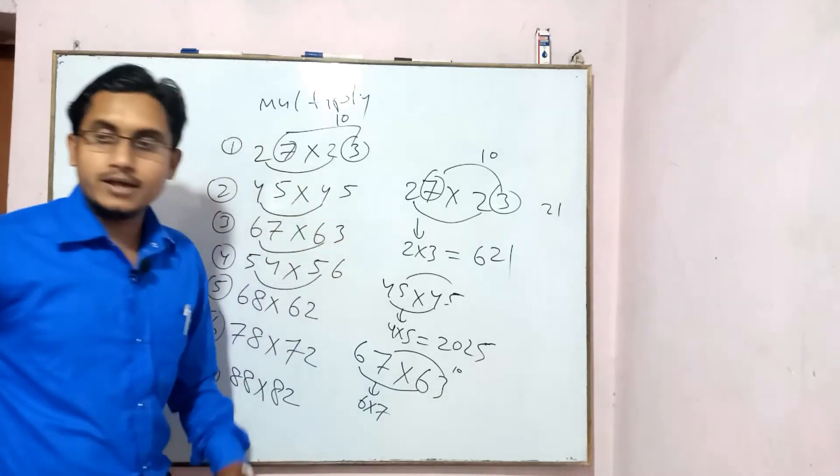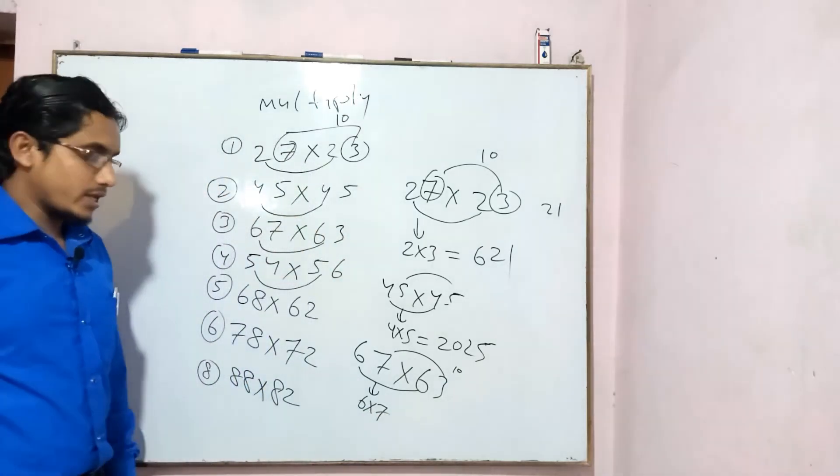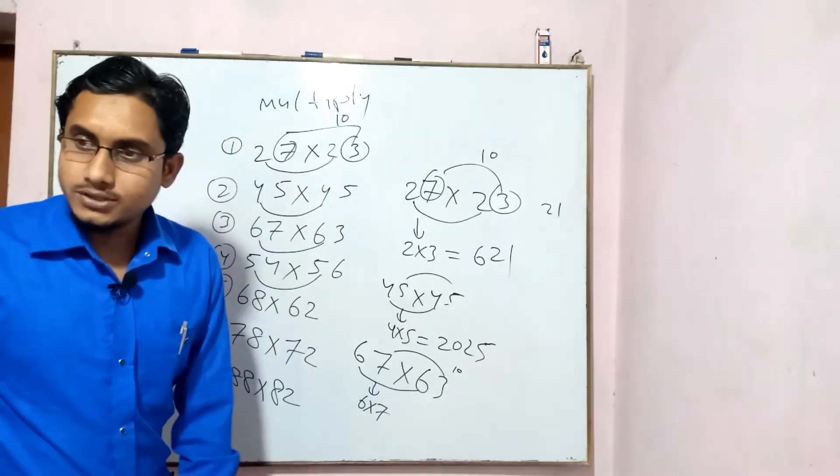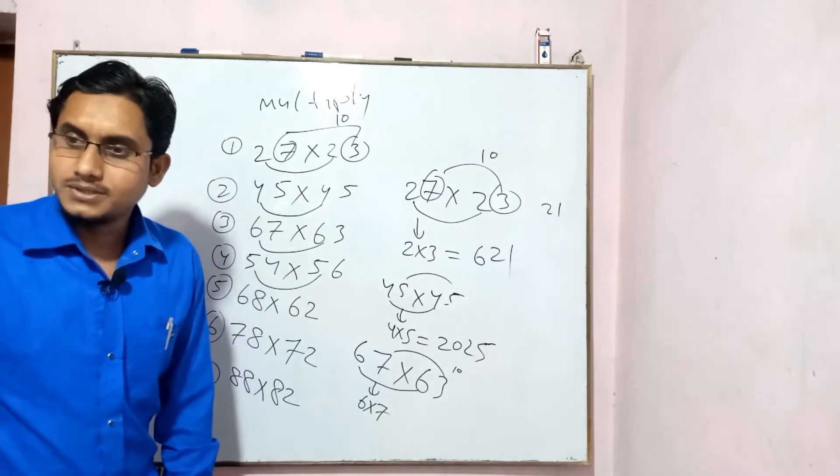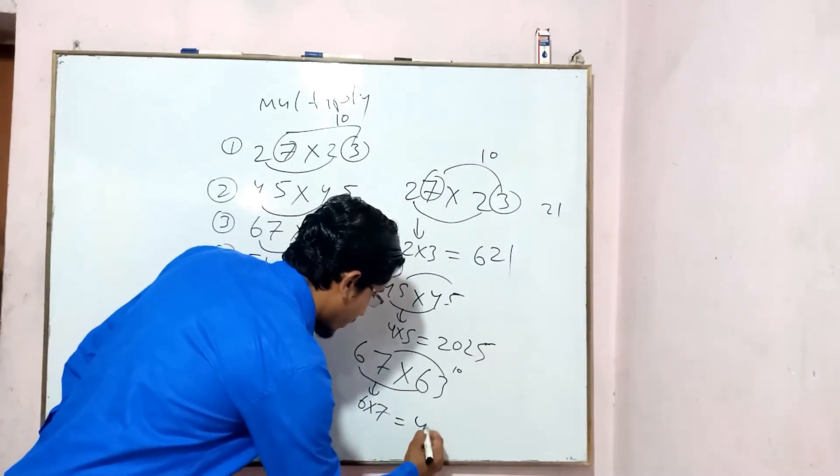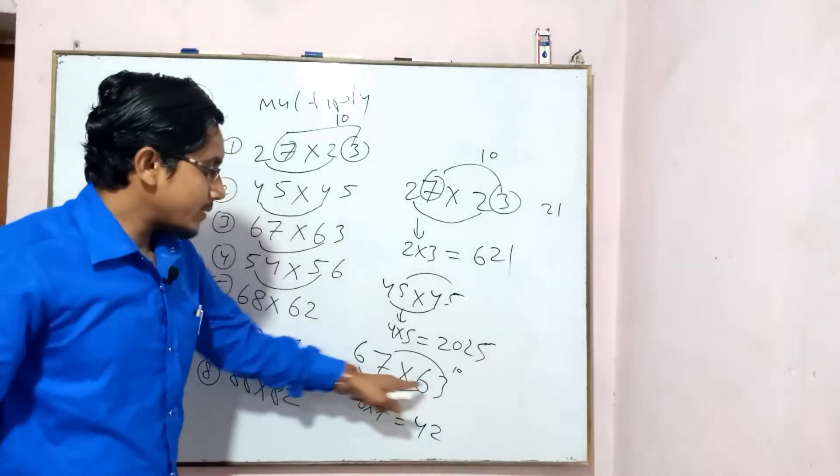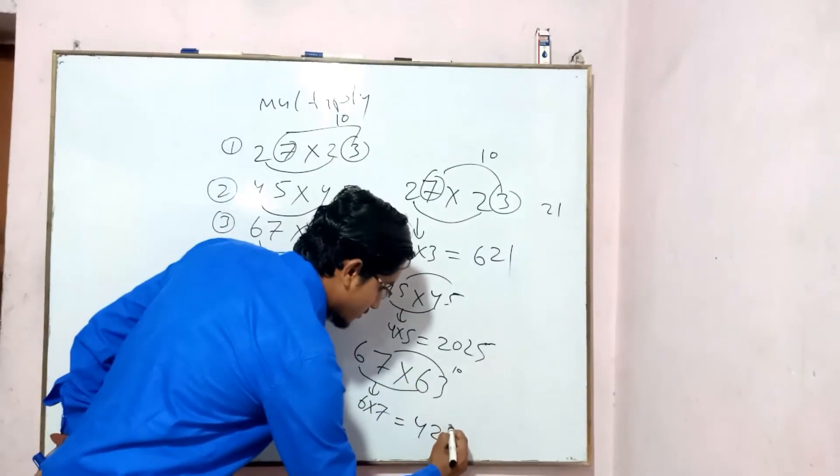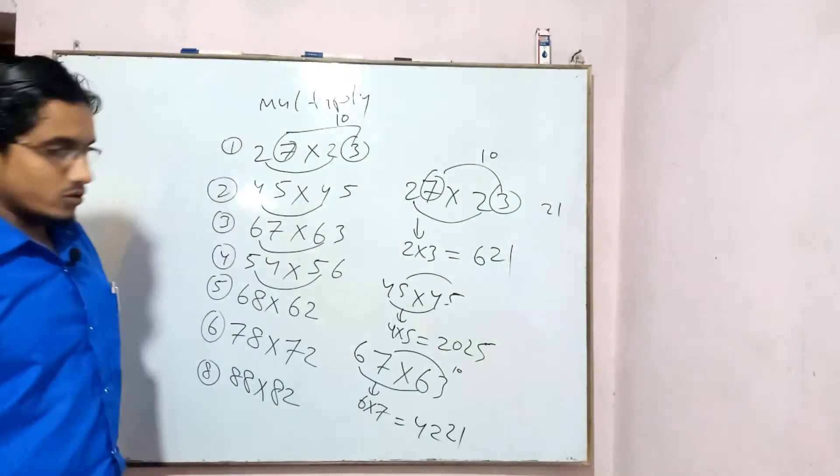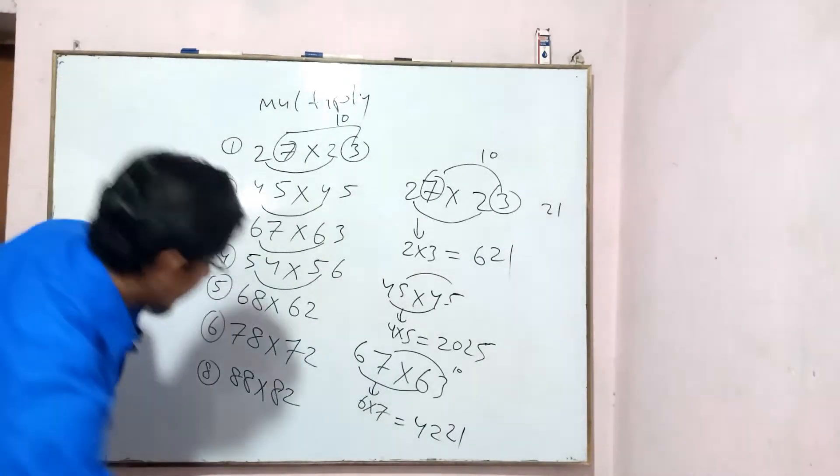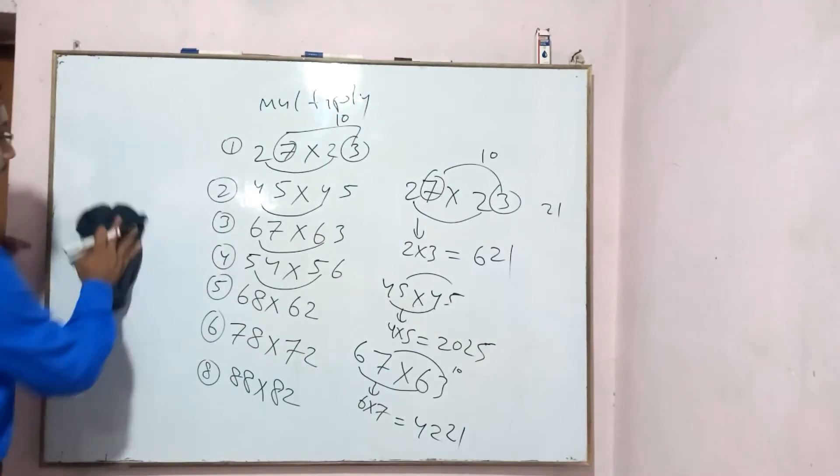So 6 times 7. 7 times 6. 6 into 7 is 42. So you have to multiply this. 21. This is the concept. It comes here. After that, there is more.